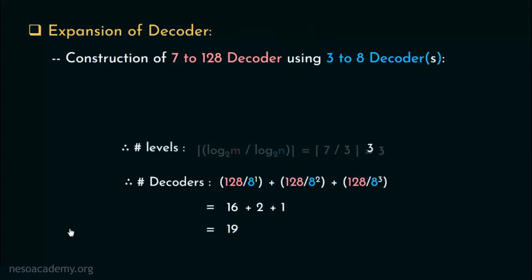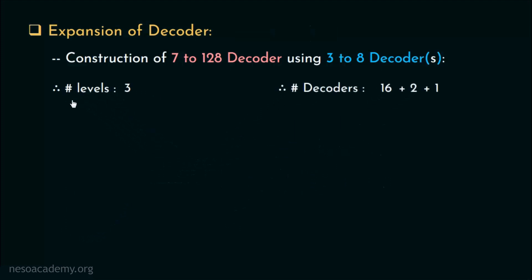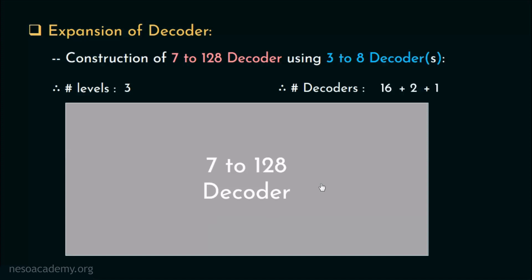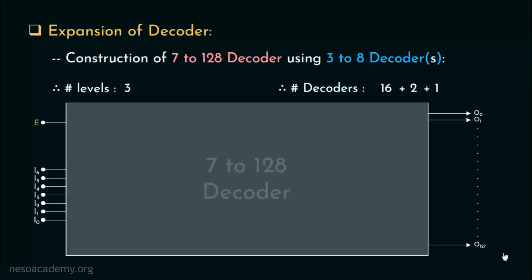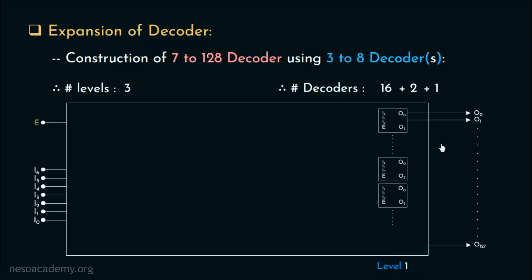Let's now observe the actual organization to acquire a broader perspective. The number of levels and the number of decoders required in each level are going to be our guide. It is a 7-to-128 decoder which has an enable line and 7 input lines starting from I6, I5, I4 till I0. Coming to the output lines, there are 128 of them, from O0 to O127. Let's now dive into the internal architecture. As usual, we will begin construction from level 1, and as per our deduction, 16 3-to-8 decoders are needed to cover all the 128 output lines.